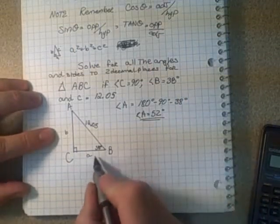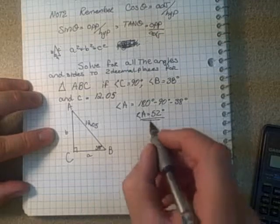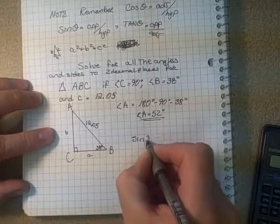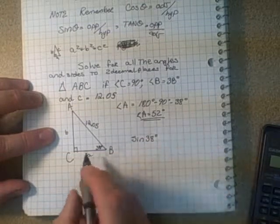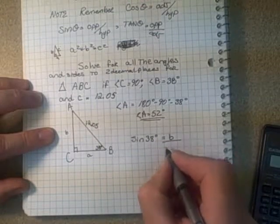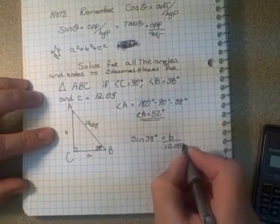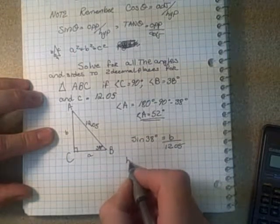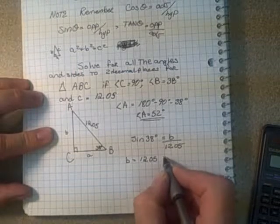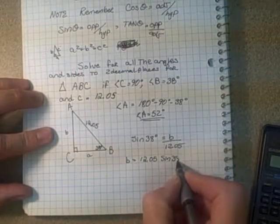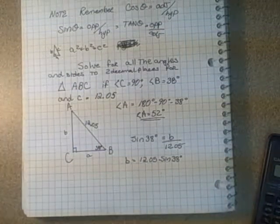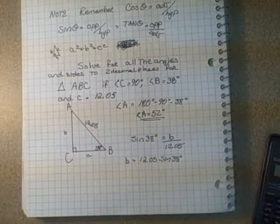And so now we have to find A and B. Well, one way to find B is if we use the sine of 38 degrees. The sine is opposite over hypotenuse, so that would be equal to B over 12.05. So therefore, if we rearrange that, B is equal to 12.05 multiplied by the sine of 38 degrees. So I'll plug that into my calculator and get my answer here.